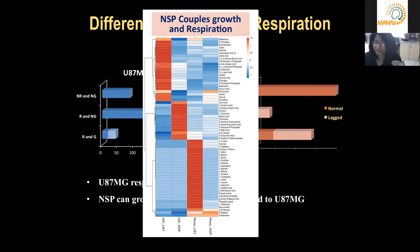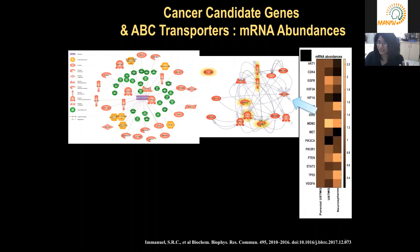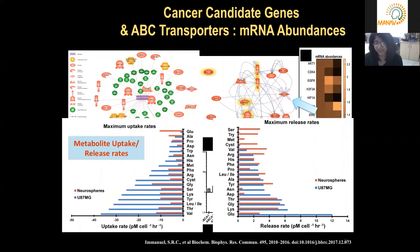Based on all these differences in metabolite uptake, nutrient uptake, growth, and respiration, we did a limited gene expression profile. We looked at mRNA abundances using RT-PCR for 23 candidate genes known in literature to be critical to glioblastoma, and found a bunch of differences as shown in the heat map. We also looked at ABC transporters, which are critical to both drug efflux and nutrient transport. The expression levels of all ABC transporters are different between NSP and U87, and this probably dictates or shapes the metabolite uptake and release rates, and hence why metabolism proceeds very differently in U87 and NSP.